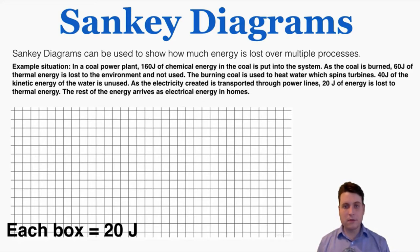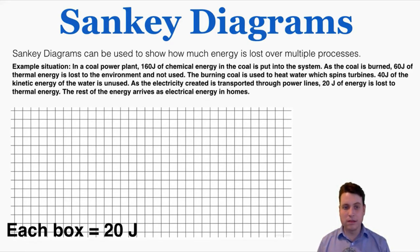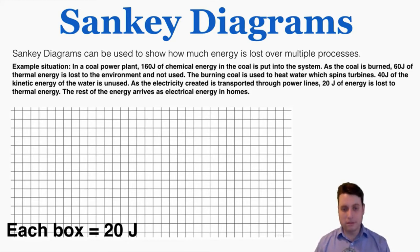Another advantage of Sankey diagrams is that we can draw them for much more complicated situations where we're losing multiple types of energy, or the same type of energy multiple times. In this example, a coal power plant is taking in 160 joules of chemical energy. As the coal is burned, 60 joules of thermal energy is lost to the environment. The burning coal heats water which spins turbines, and 40 joules of kinetic energy from the water is unused. As the electricity is transported through a power line, 20 joules is lost to thermal energy. The rest arrives as electrical energy in homes. We can use a Sankey diagram to make this look simple.